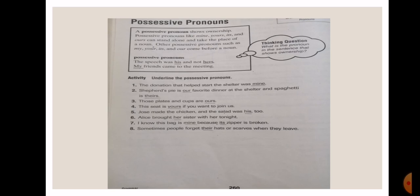Let's look at the exercise on page number 260. Before we move on to the exercise, let's look at the example on the table. The speech was his and not hers, so there are two possessive pronouns here: his and hers. My friend came to the meeting. My is a possessive pronoun.